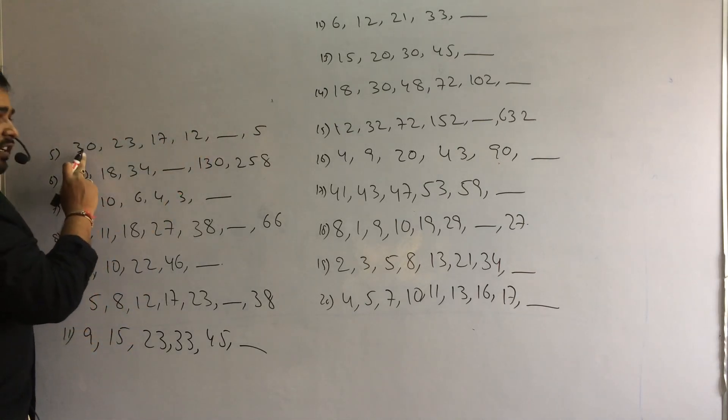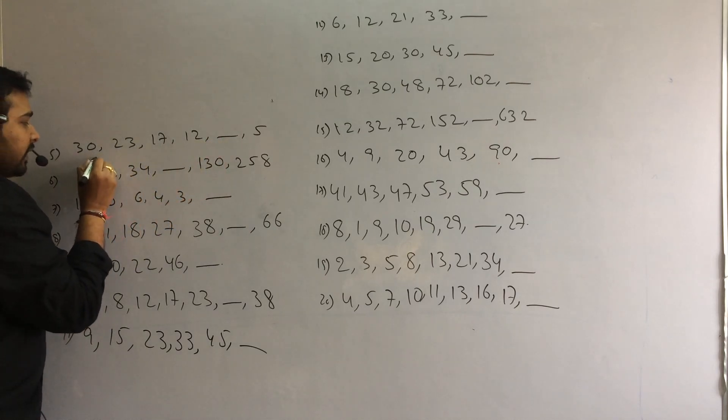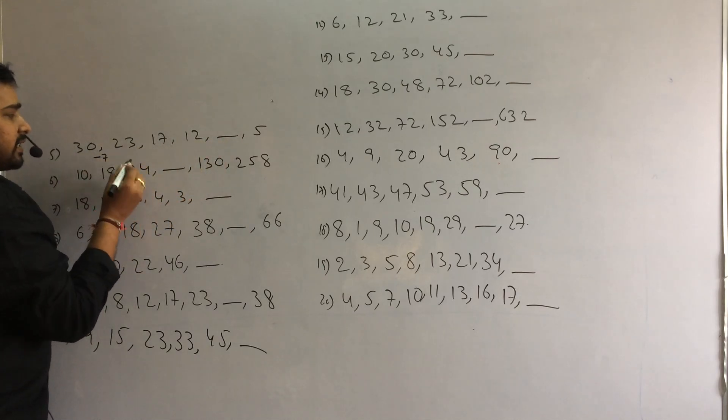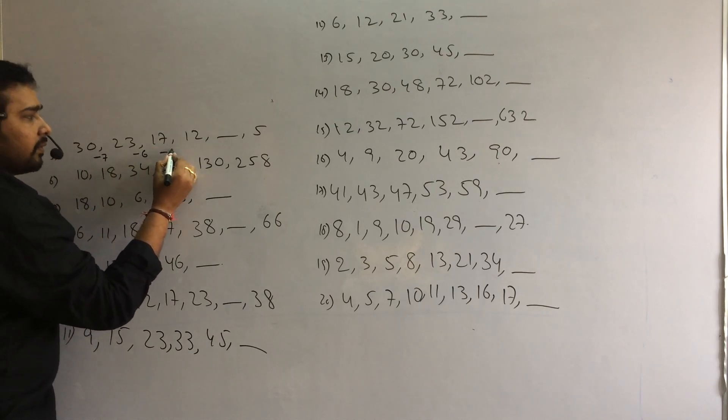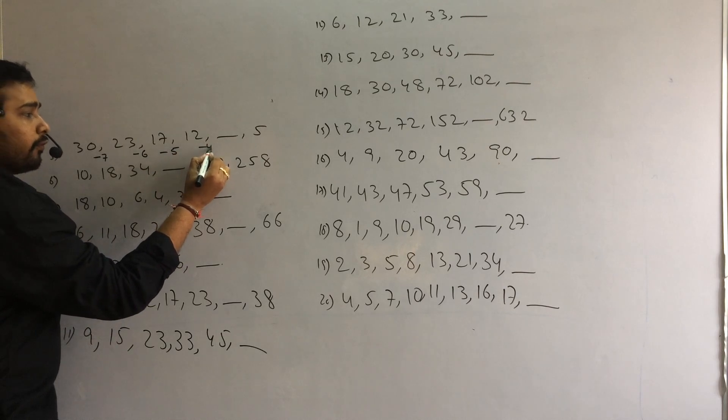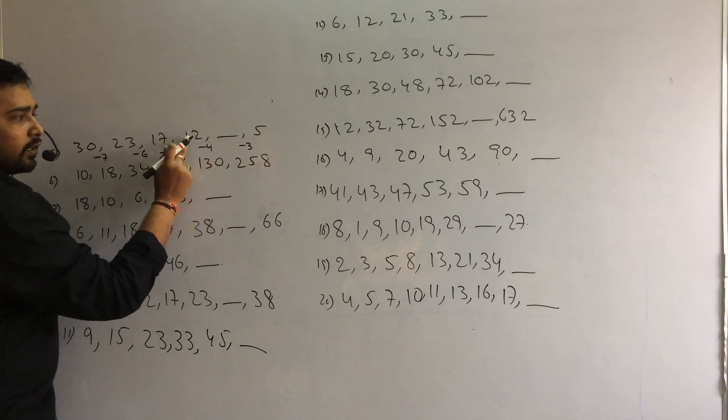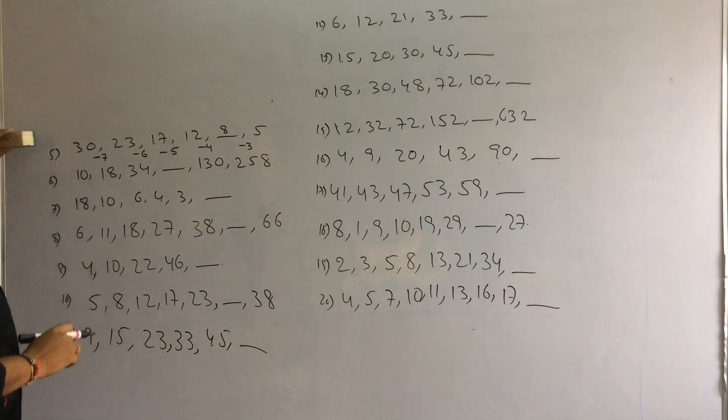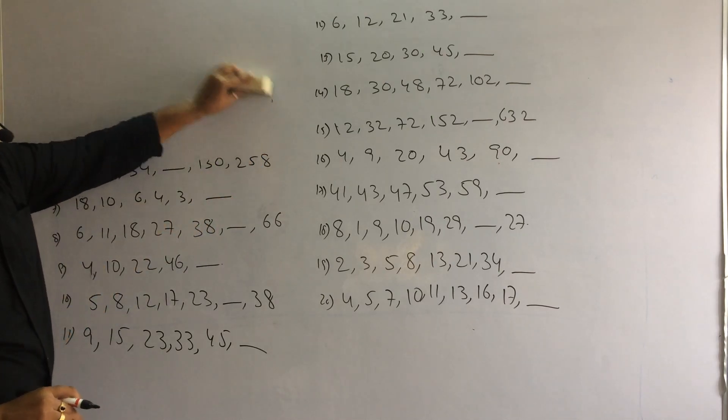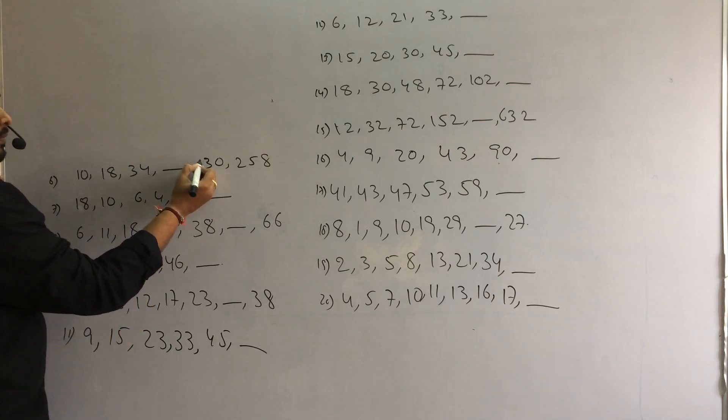Next. Here also difference is very normal. In decreasing order. Difference is 7, 6, 5, 4, 3. 12 minus 4, 8. 8 minus 3, 5. So natural numbers in increasing order. Next.